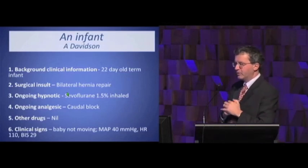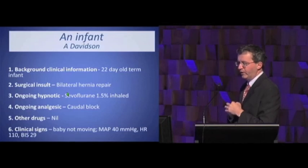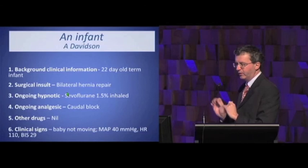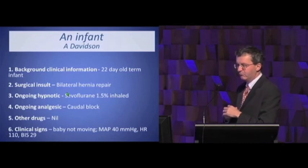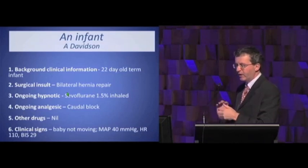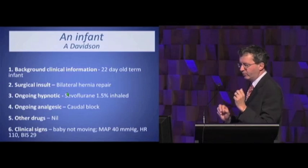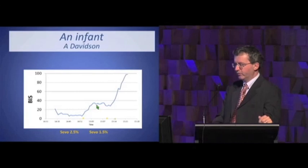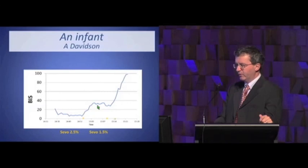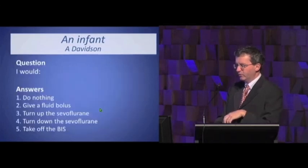Now let's try a case with an infant. This is a 22-day-old term infant having a bilateral inguinal hernia repair, on sevoflurane 1.5% with a caudal block and no other drugs. Clinical signs: the baby's not moving, mean pressure is 40 mmHg, heart rate is 110, and the BIS is only 29. So you're giving slightly less than a MAC — about two-thirds of a MAC of sevoflurane. Very low BIS, but hemodynamically looks fine. We were giving 2.5% and thought that was probably too deep, so we turned it down to 1.5%, and the BIS is in the high 20s. What would you do: nothing, give a bolus of fluid, turn up the sevoflurane, turn down the sevoflurane, or take off the BIS?